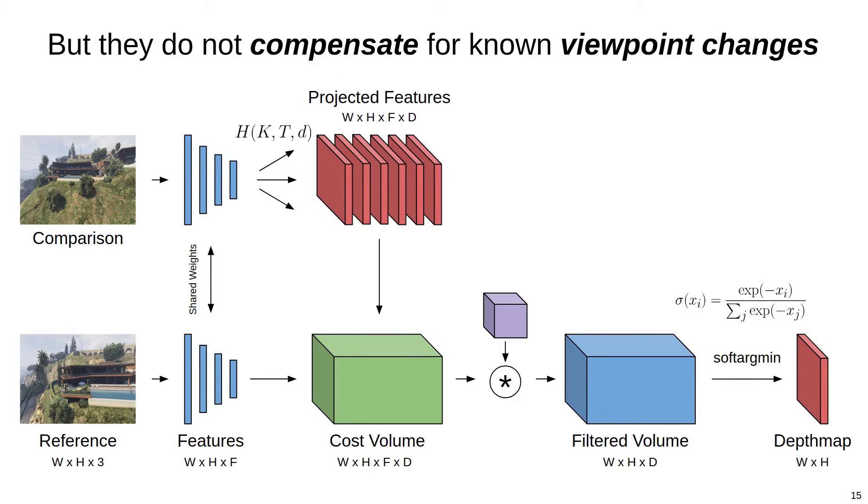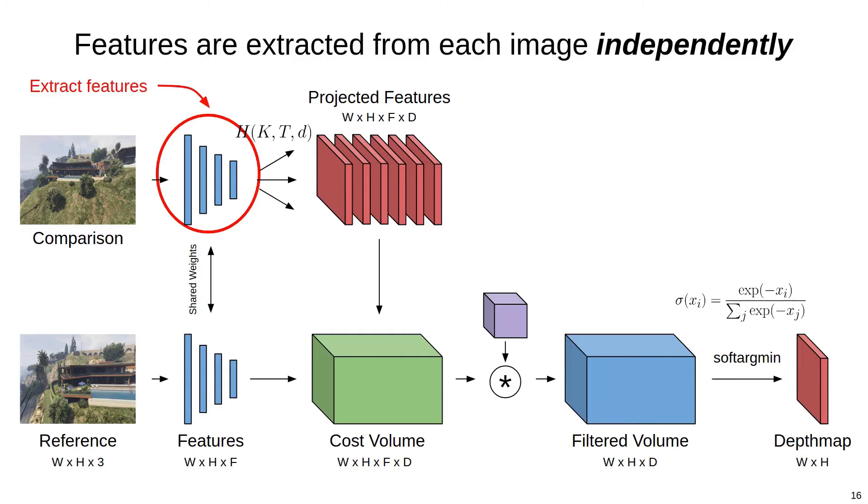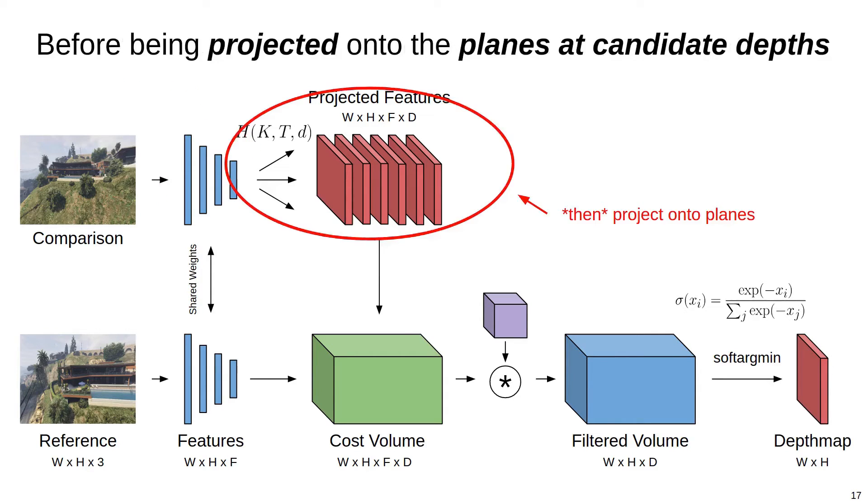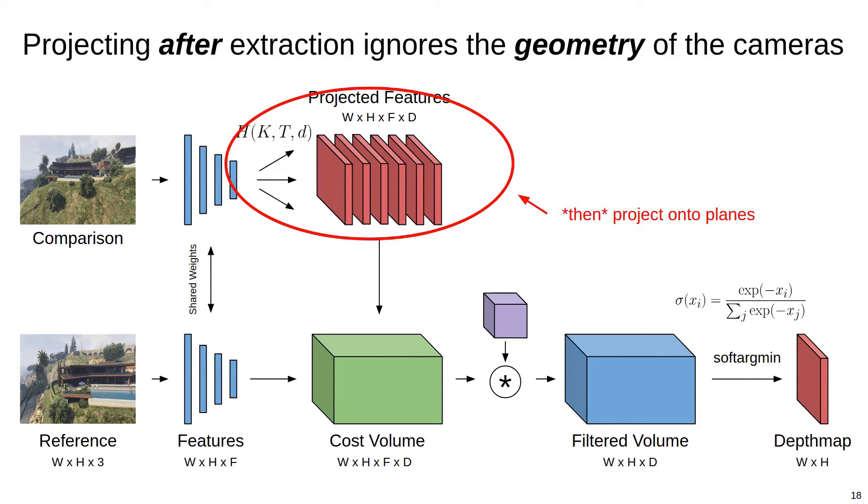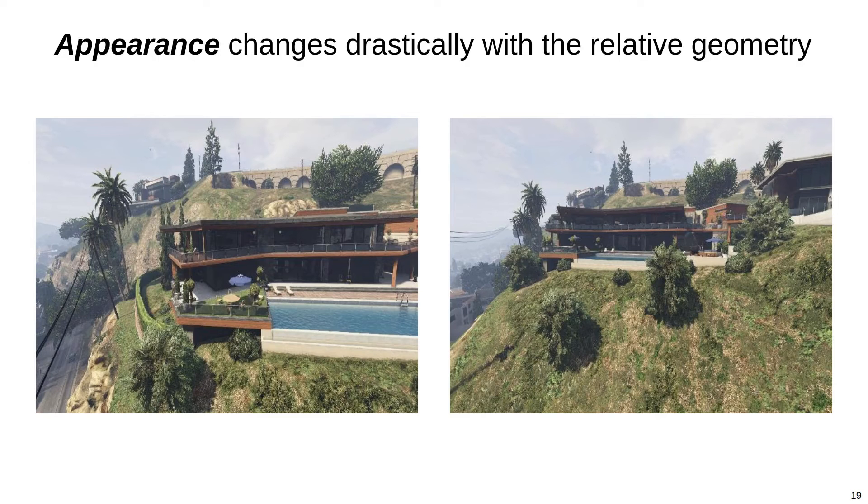In particular, the feature extraction sub-networks in these learned MVS approaches do not compensate for the known viewpoint changes when computing features and establishing pixel correspondences. By that, I mean that in the forward pass of the network, features are first extracted from each image independently, and then projected onto the planes in the reference frame. Applying the projection after extraction means that the feature network does not consider the relative geometry of the cameras, which is bad because objects can appear dramatically different when observed from different viewpoints.